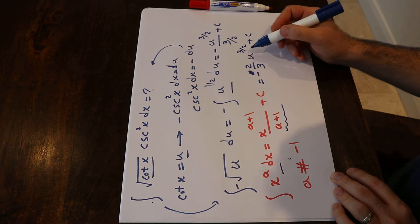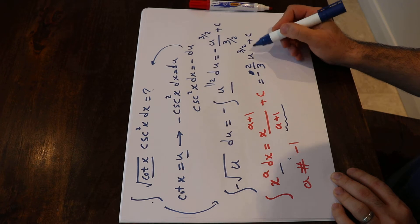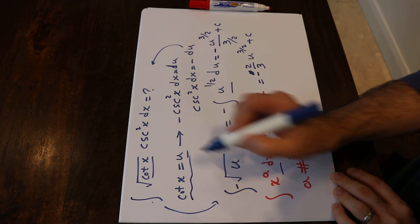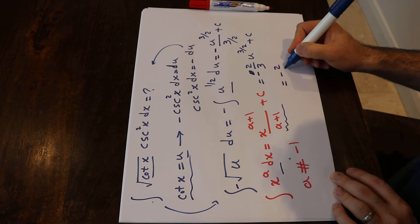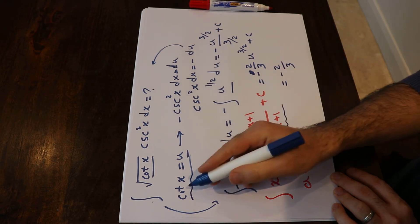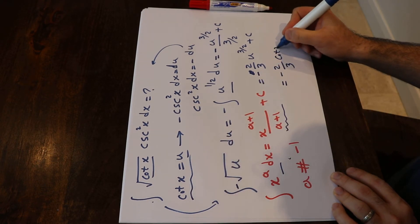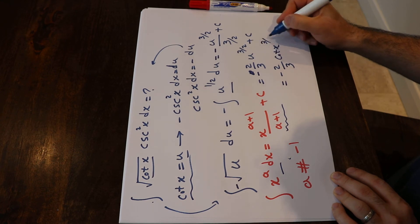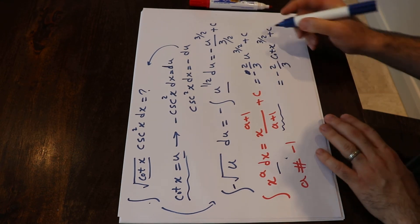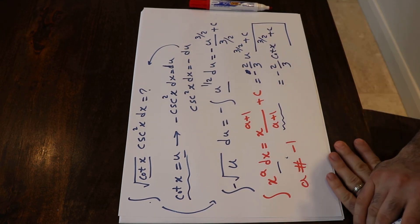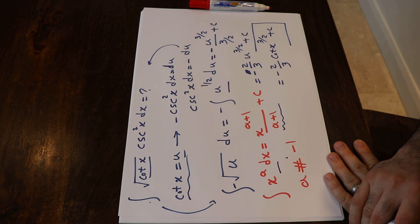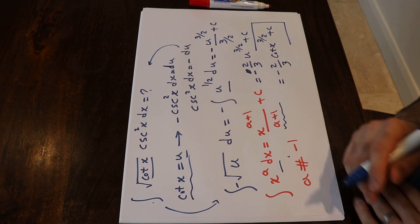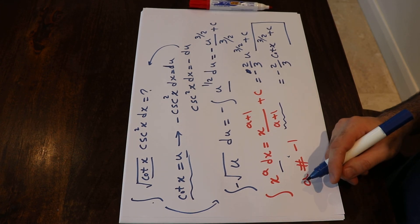At this stage, all you need to do is substitute the value of u back using the definition from the very beginning, which gives minus two thirds times cot x to the power of three halves plus c. And that is the solution to this integral. I hope you found this video useful. I will upload more examples to this channel, so if you're interested, please feel free to subscribe.